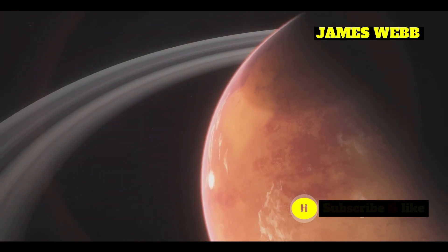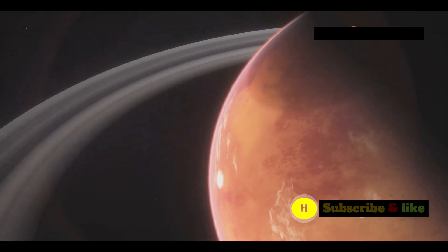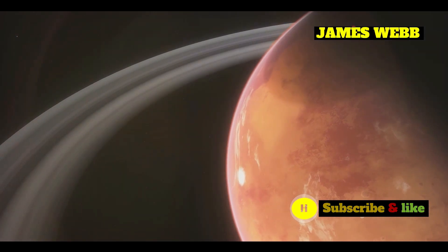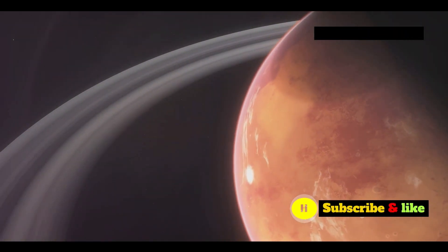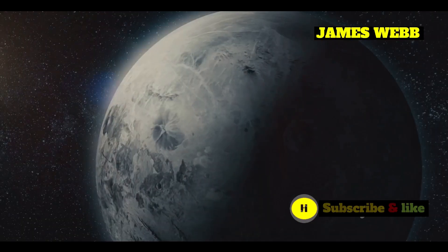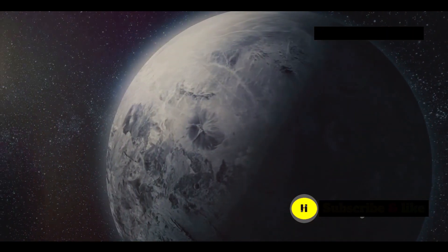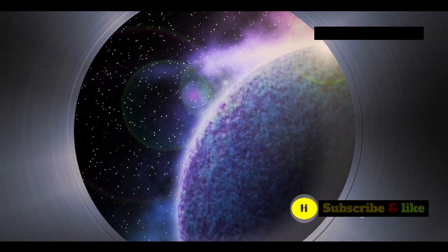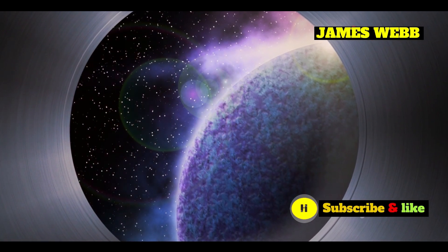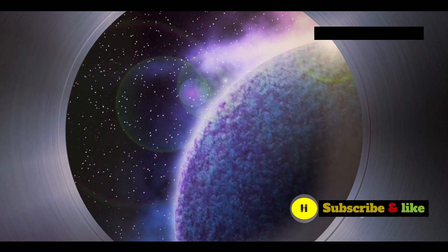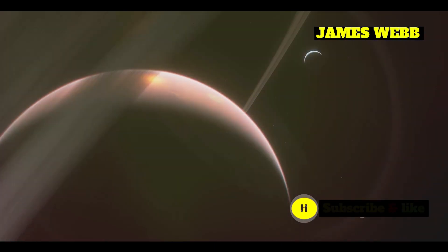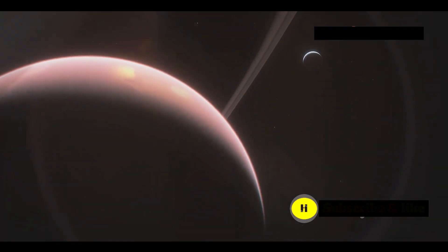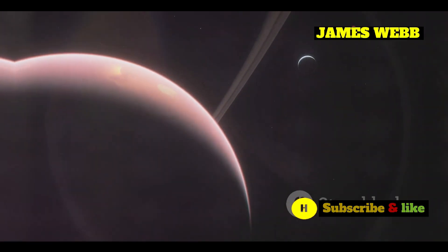The discovery of an atmosphere on 55 Cancri E, even one as exotic as its carbon monoxide-rich composition, shows that atmospheres can exist even on planets bombarded with intense radiation from their stars. This finding gives us hope that atmospheres might be more common on rocky planets than we previously thought. Studying extreme worlds like 55 Cancri E helps us improve our models of planetary formation and evolution. It also reminds us that the universe is full of surprises, and life, if it exists elsewhere, might be in forms we can't even imagine.